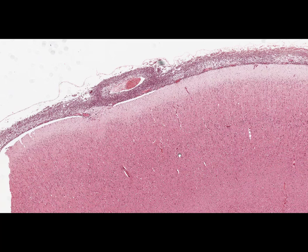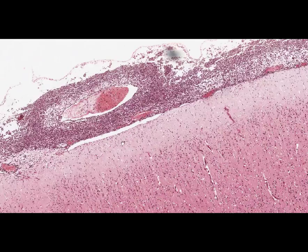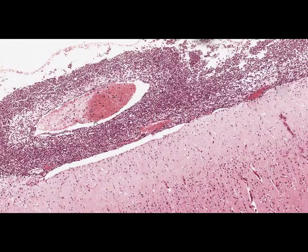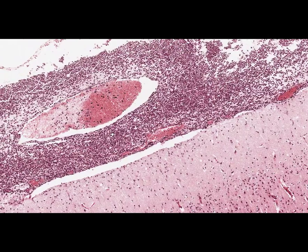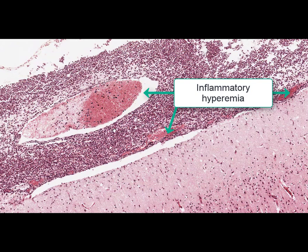At low magnification the substance of the brain tissue and the thickened pia mater are clearly seen. At high magnification two main morphological changes are to be noted. First, very pronounced inflammatory hyperemia, typical for acute inflammation.